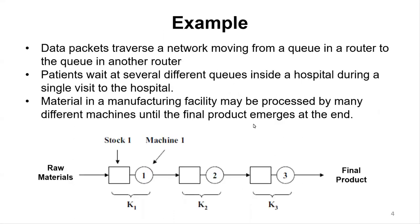For example, data packets traverse a network moving from one queue in a router to the queue in another router. Patients wait at several different queues inside a hospital during a single visit. Material in a manufacturing facility may be processed by many different machines until the final product emerges at the end.